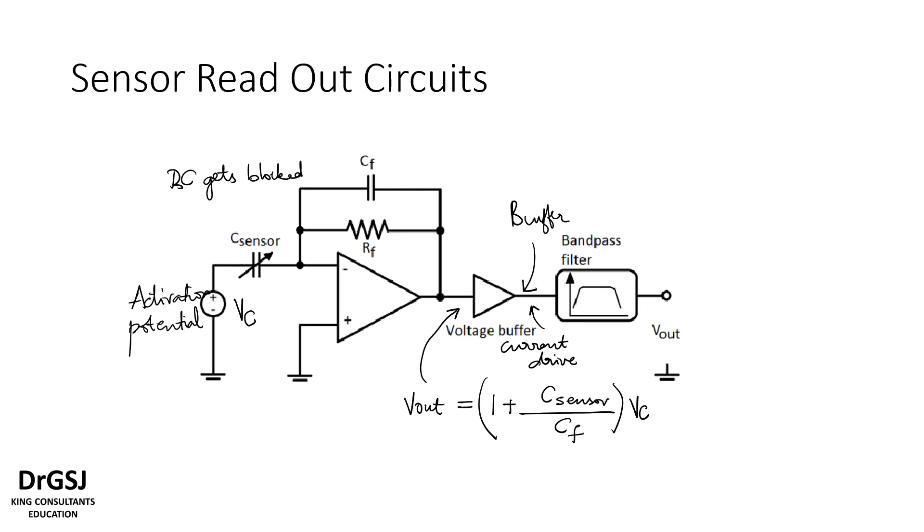DC gets blocked here and only the AC signal gets passed. So this AC signal now is then transferred back and this difference with AC signal which is captured is then brought out.